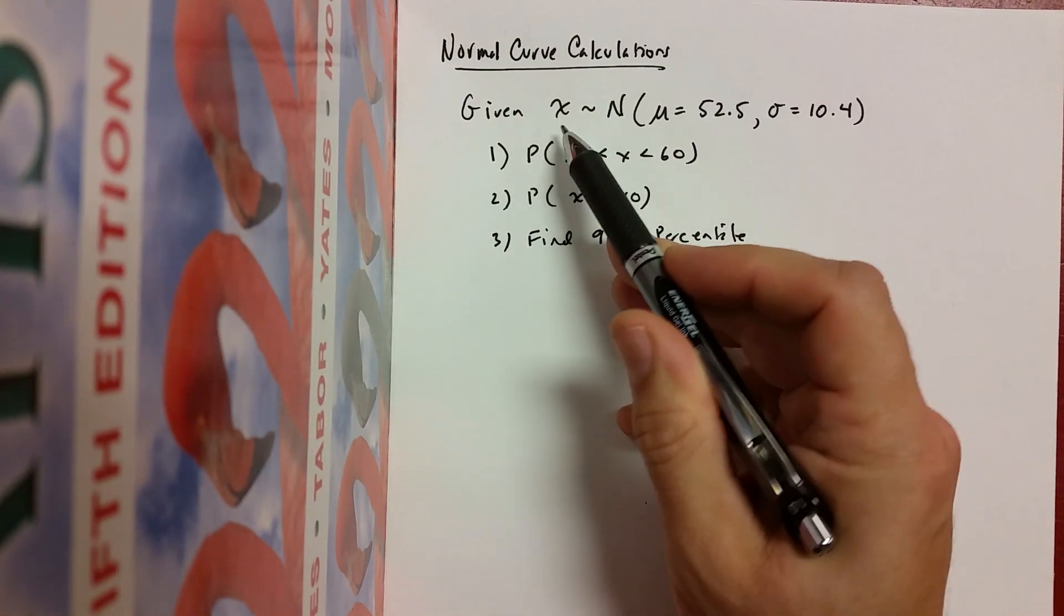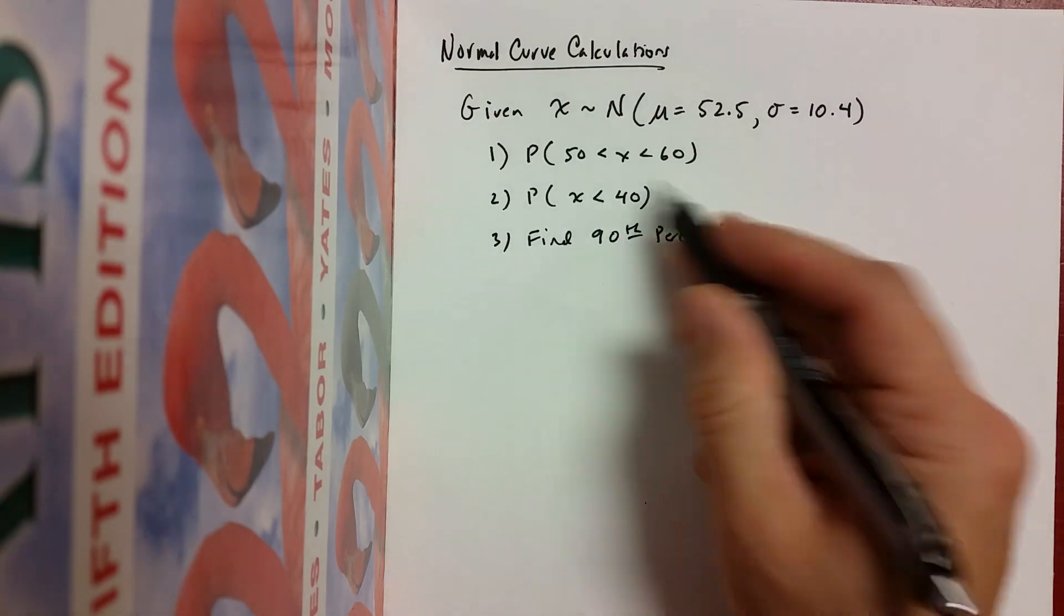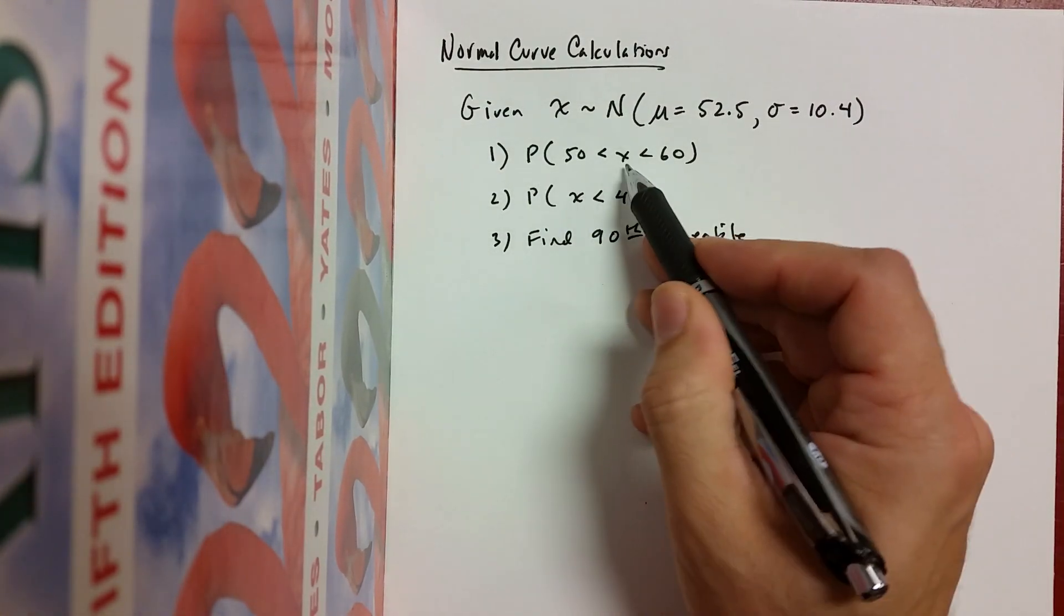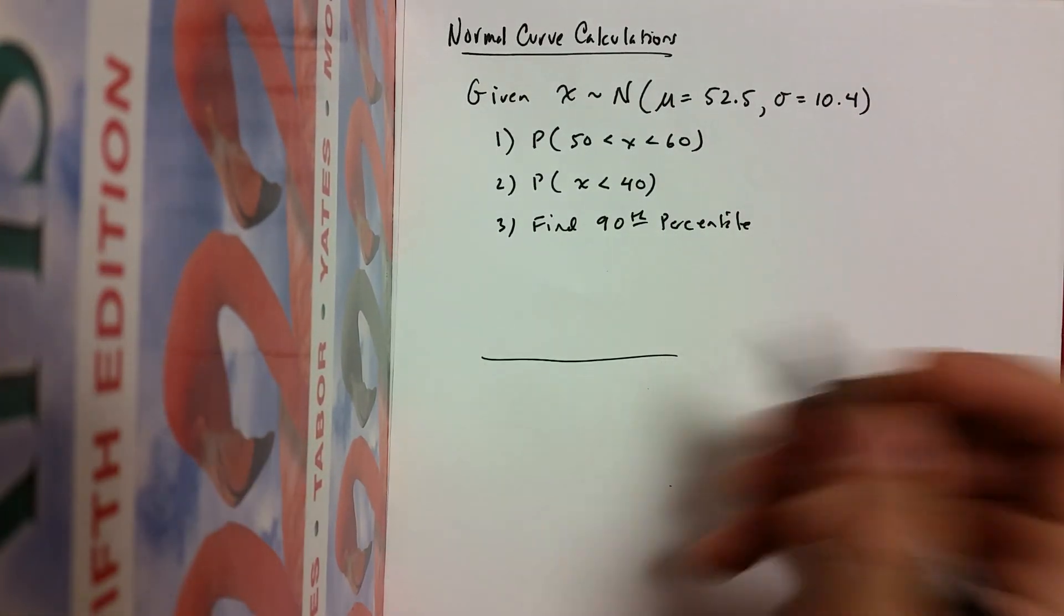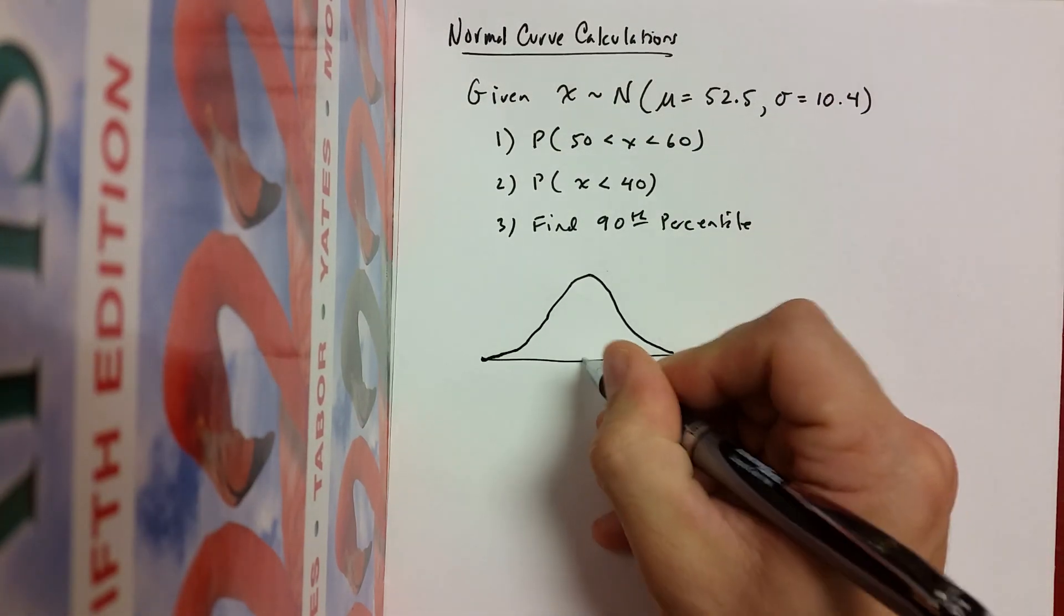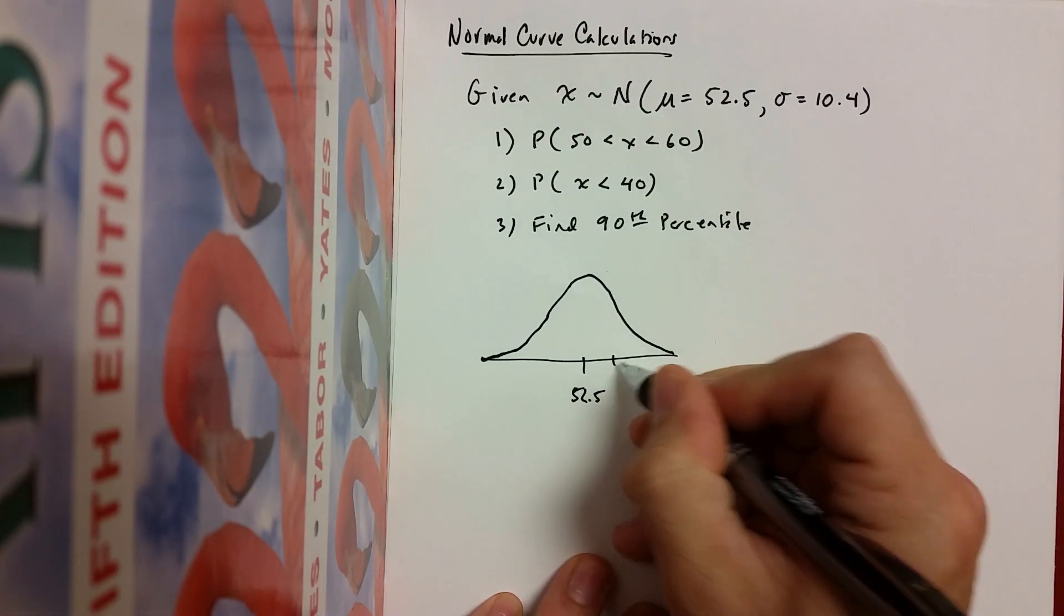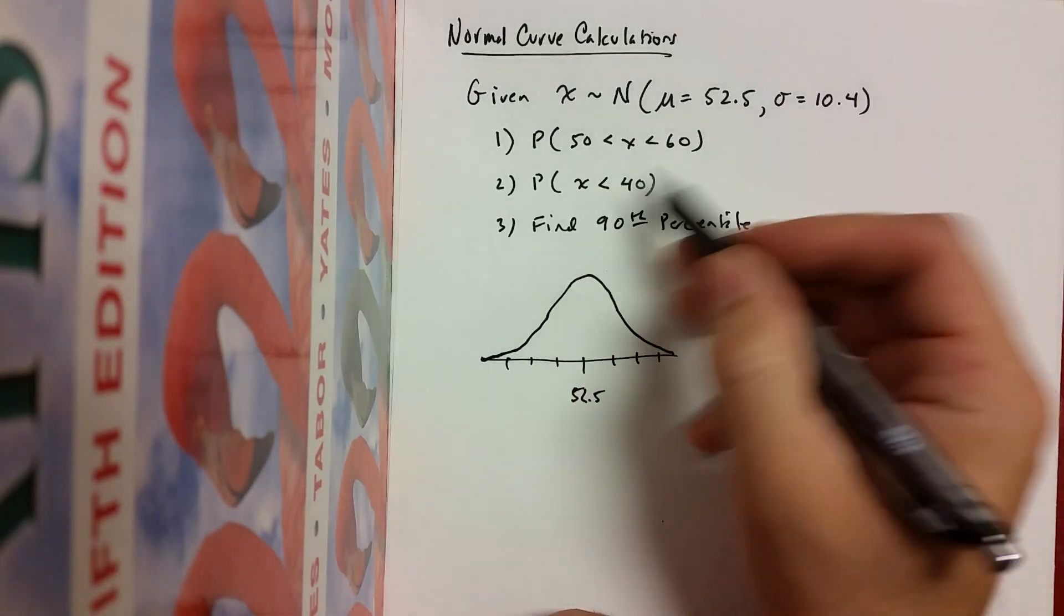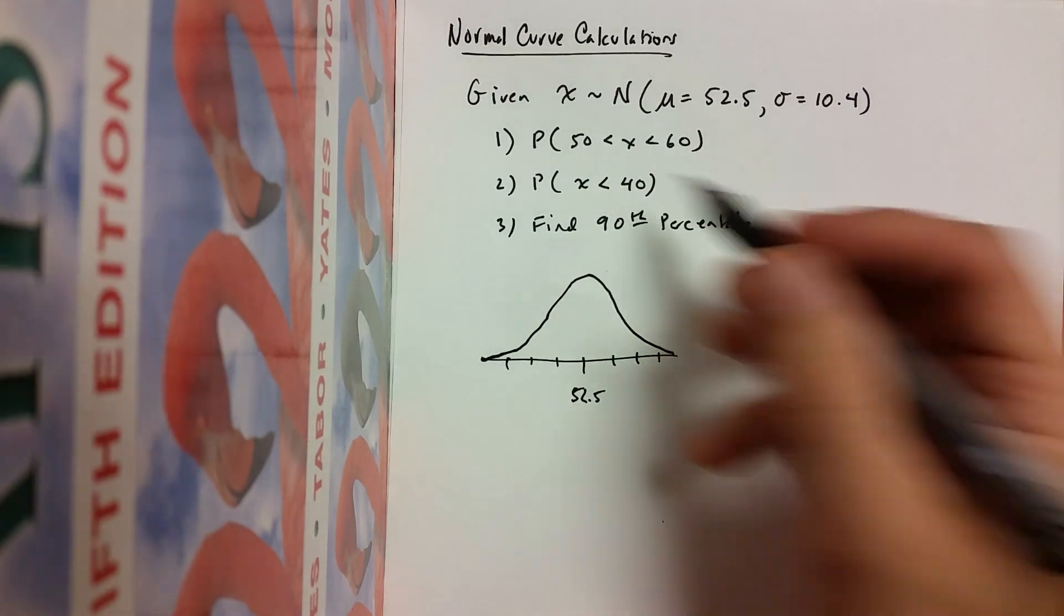Let's say we have a variable X, which is approximately normal with a mean of 52.5 and standard deviation of 10.4. Let's calculate these things. So the first thing is the probability that X is between 50 and 60. So I'm just going to quickly sketch a rough normal curve here. Technically, 52.5 would go in the center here, and then I would go up and down some number of standard deviations. I could figure out exactly where 50 and 60 ought to be on here, but I'm just going to estimate it roughly.